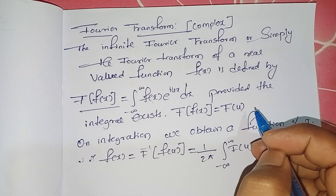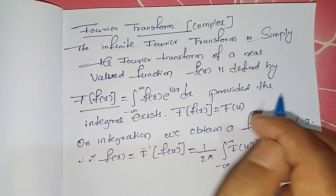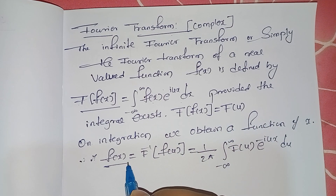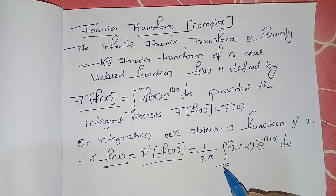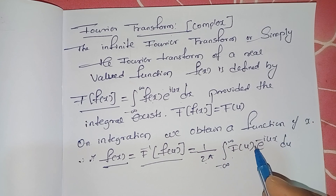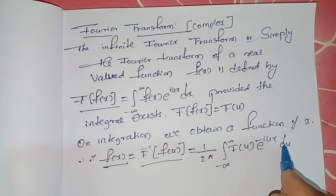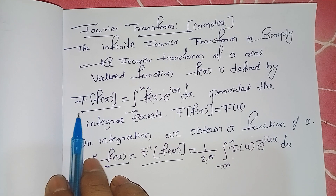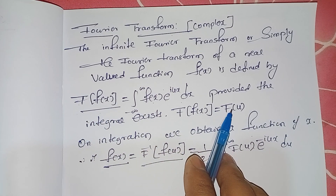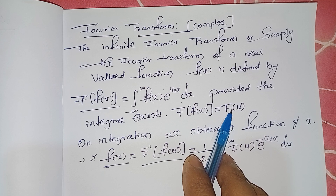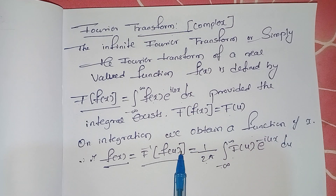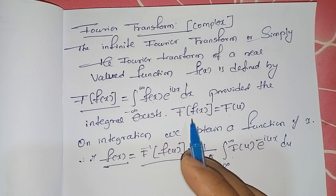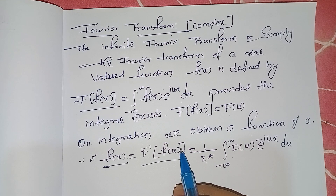The inverse Fourier transform is defined as: f(x) = F⁻¹{F(u)} = (1/2π) times the integral from minus infinity to plus infinity of F(u) times e^(−iux) du. Please be careful about the terminology: when operating the Fourier transform on a function of x, the answer should be in terms of u; when operating the inverse Fourier transform on F(u), the answer should be in terms of x.